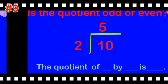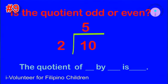Kindly repeat. Item number nine: is the quotient odd or even? The quotient of ten by two is odd.